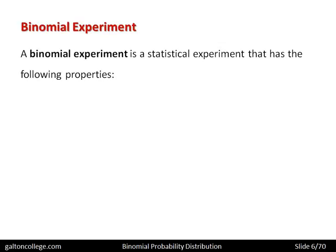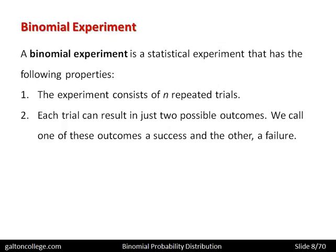A binomial experiment is a statistical experiment that has the following properties. It consists of n repeated trials — it is performed more than once, over and over. Out of this process of performing it repeatedly, the associated probabilities can be computed and outcomes can be calculated. Each trial can result in just two possible outcomes. We call one of these the success and the other the failure, so there are just two possible outcomes to a binomial experiment.